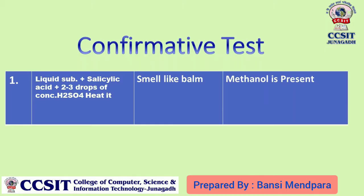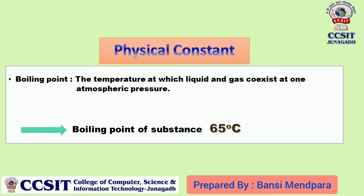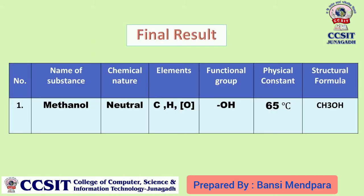This is a confirmative test. You can confirm that methanol is present. If you have a sample, the boiling point is near about 50 to 60 degrees. The ethanol boiling point is 78 degrees. There is a base of alcohol. It is 50 to 60. We know that methanol is present. This is a liquid substance. This is salicylic acid — 2 to 3 drops of H2SO4. This is methanol present. The boiling point is 65 degrees Celsius. The name of the substance is methanol. Chemical natural elements: C, H, O present. The functional group is OH. The physical constant is 65 degrees Celsius. Structural formula: CH3OH.